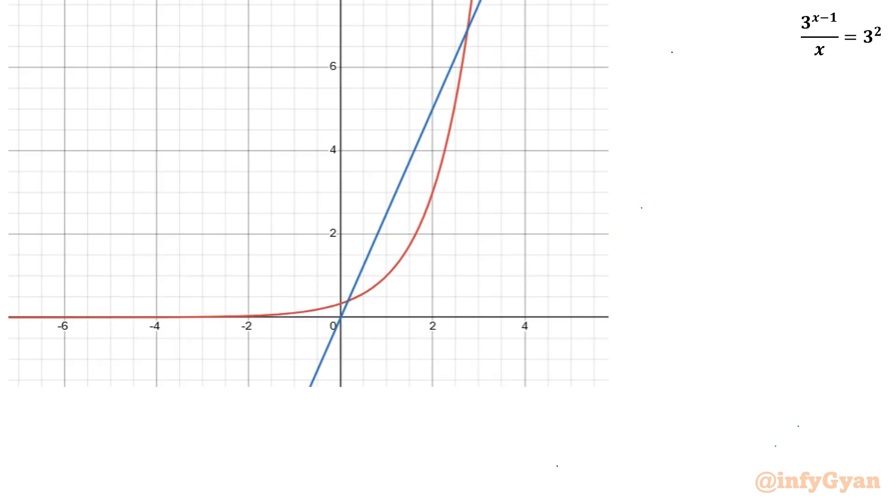Let us talk about the graph. See, this is the graph of 3 to the power of x minus 1, an exponential function, monotonic increasing. And this blue color graph is the graph of 9x. Let us consider this is 3, this is 6, minus 3, minus 6, minus 9. Now you can see there are two intersection points.